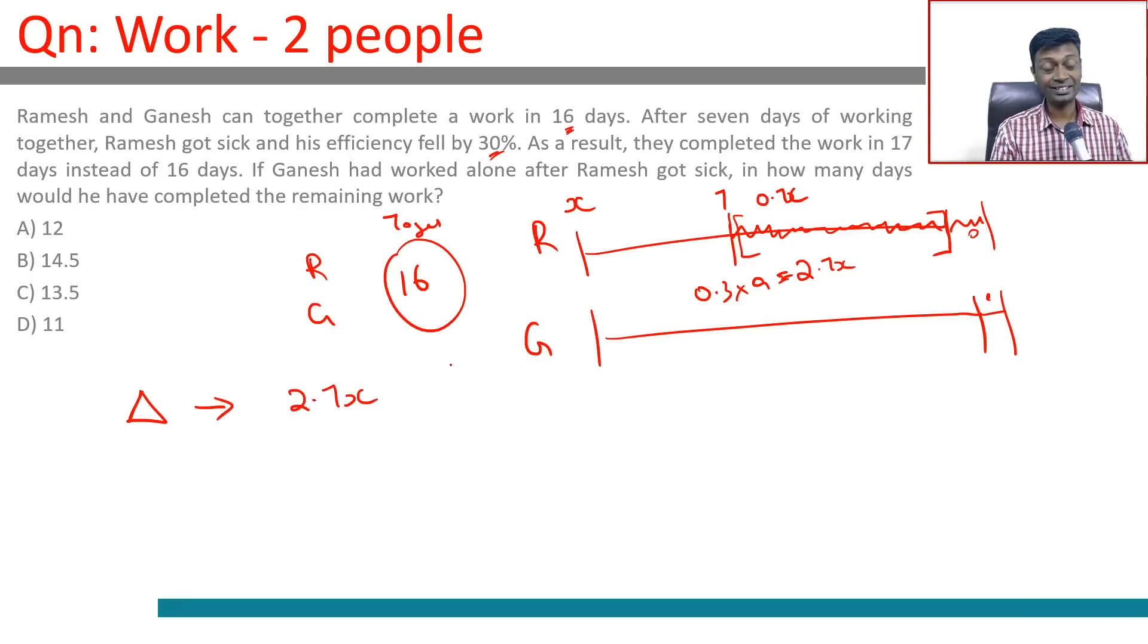This 2.7x is being compensated by one day of Ganesh plus another 0.7 of Ramesh, because the 17th day also he works at reduced efficiency. So 2x equal to G, or G is twice as good as R.